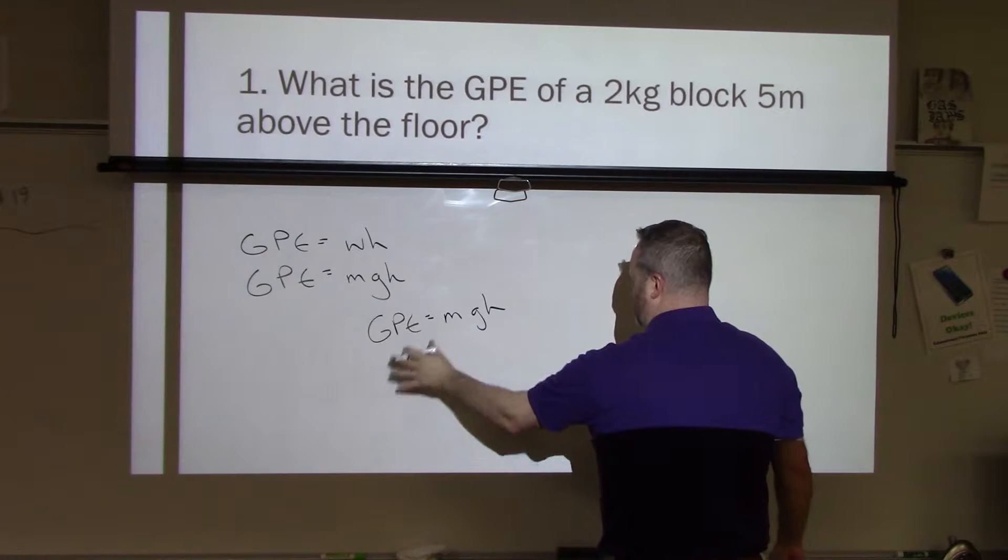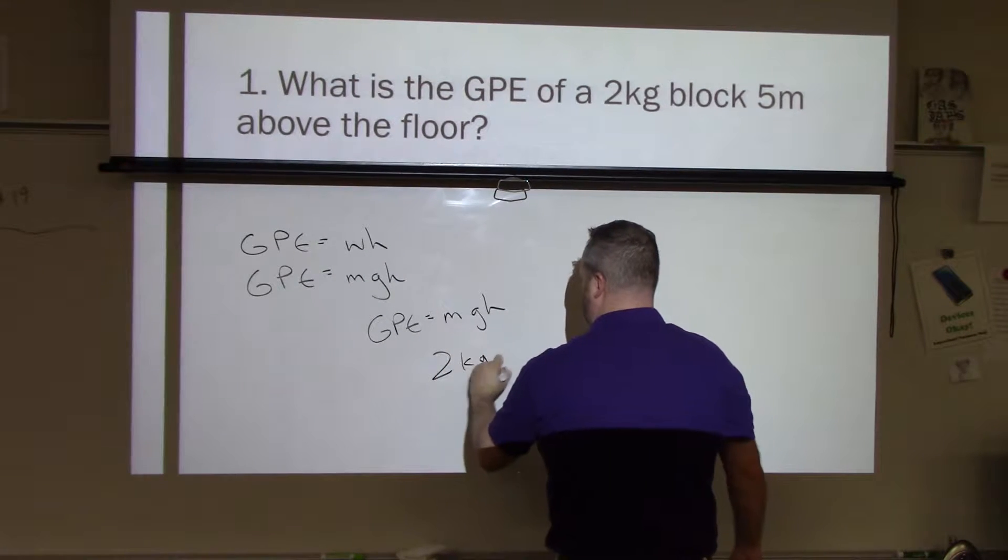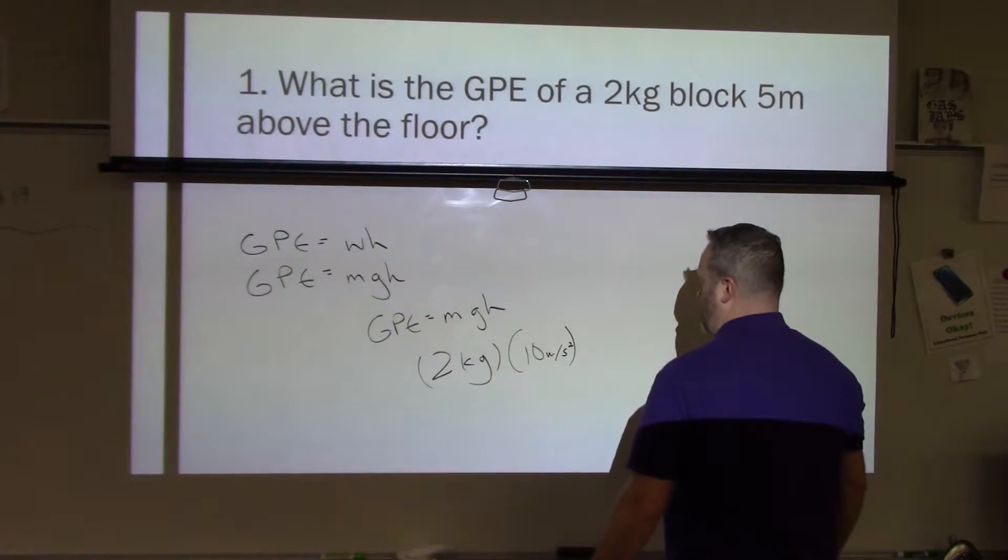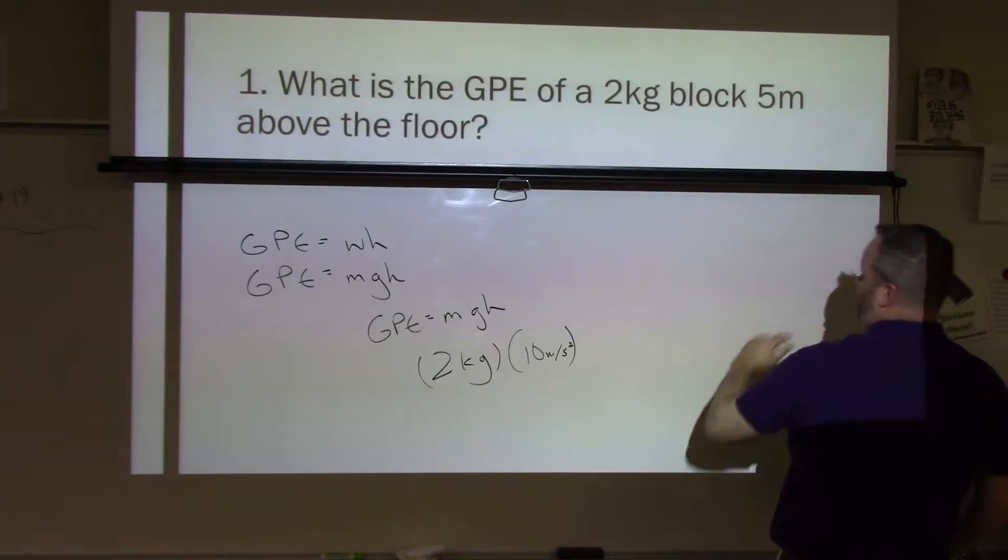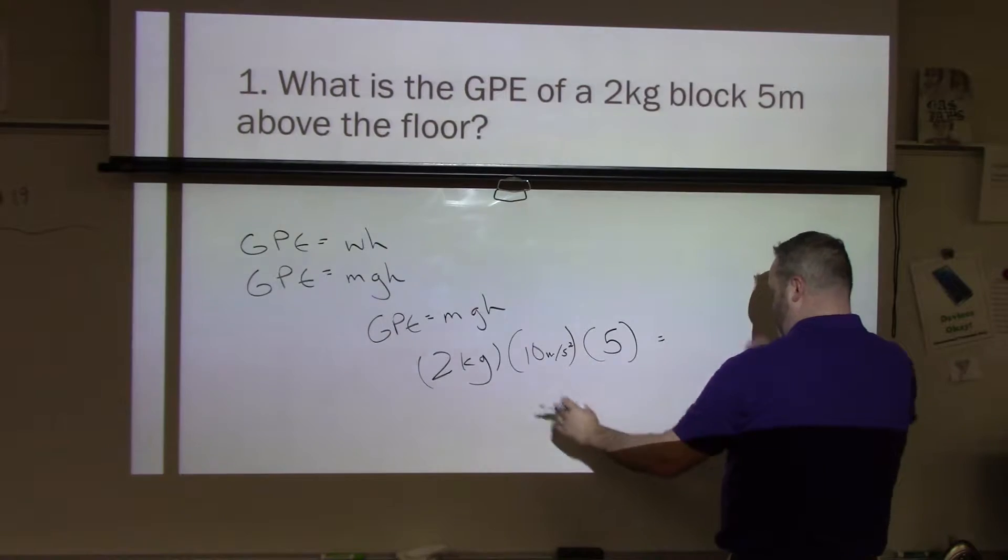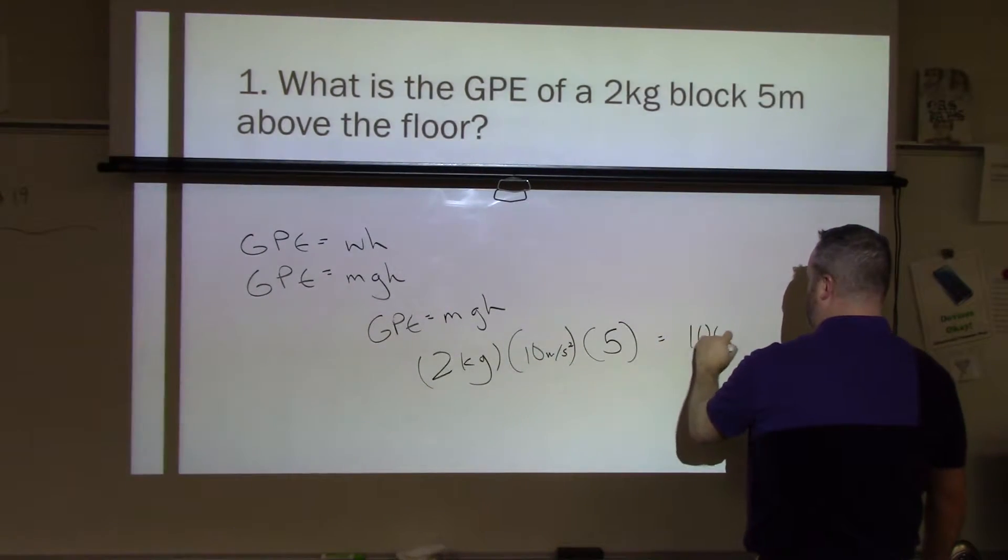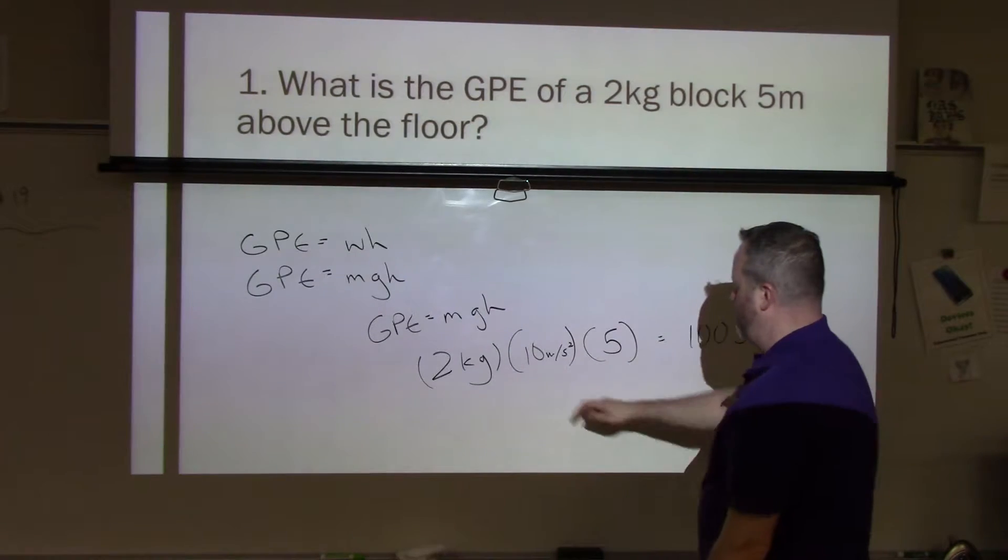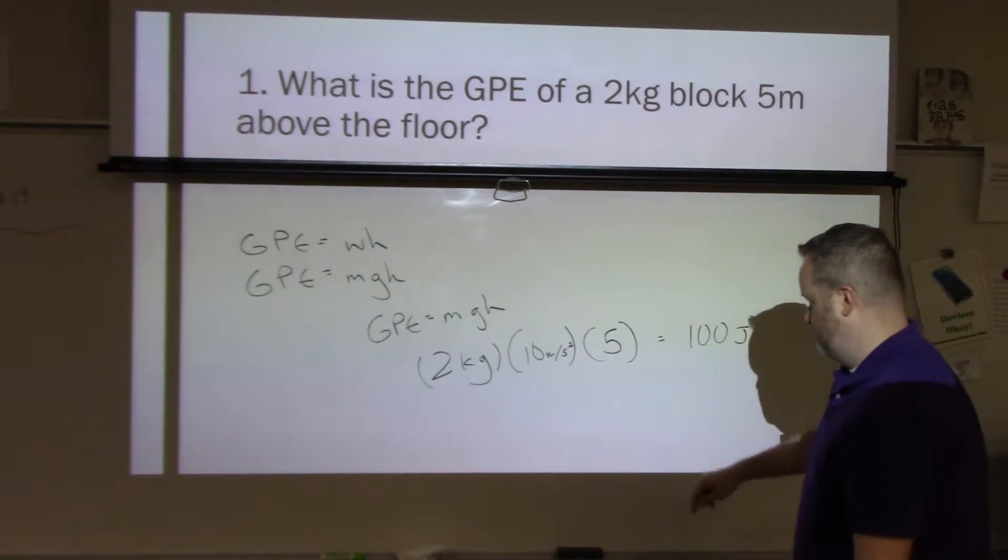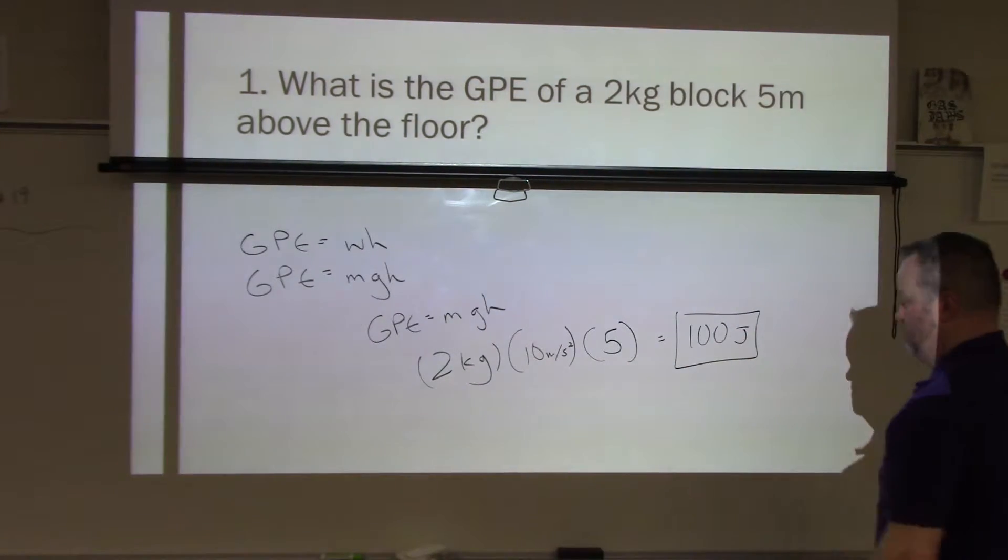So what I can do is say, okay, so my mass is two kilograms, gravity is about 10 meters per second squared, and then my height is 5. So looking at 2 times 10, that's going to be 20. 20 times 5 is going to be 100 joules. Now remember, I'm estimating this value, I'm not using the precise number of 9.8. Therefore, this is not a precise answer, but it's very close to the actual answer.